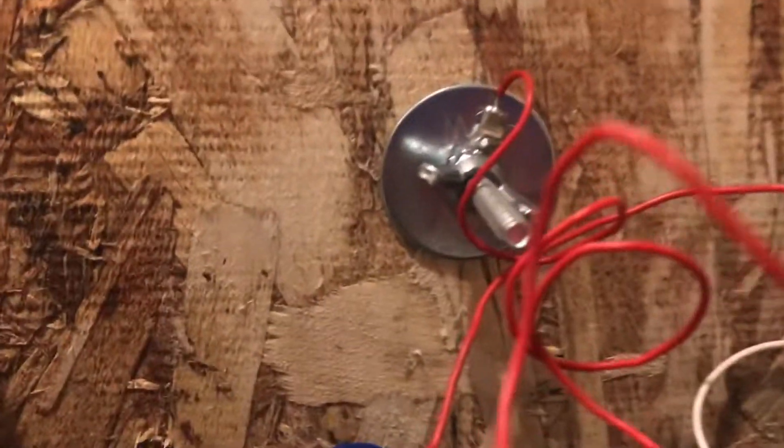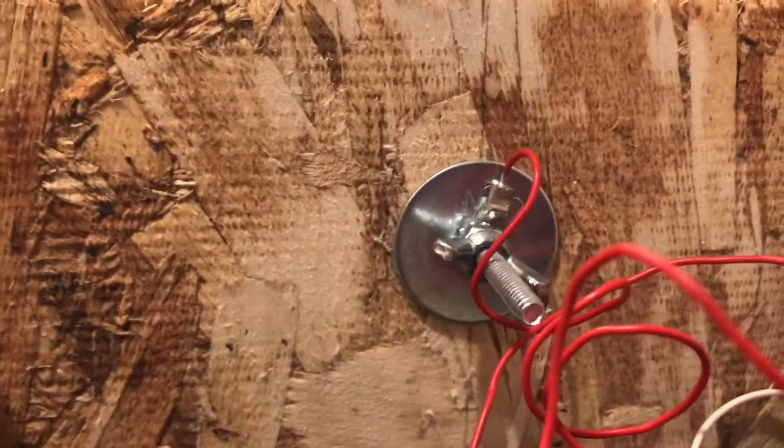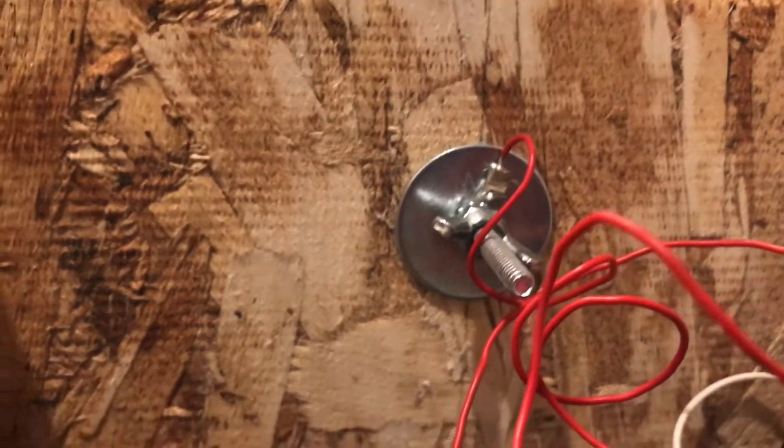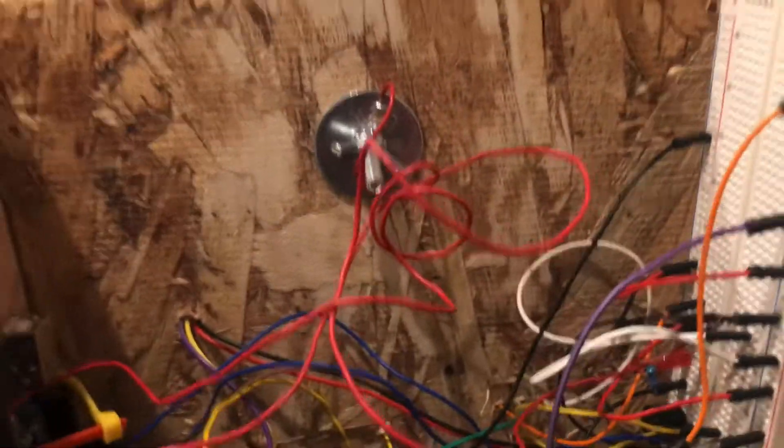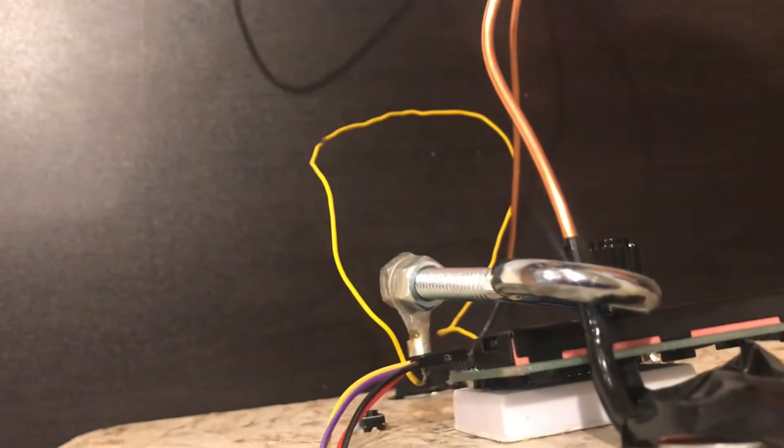Up top right there we have one side of the copper wire being grounded and connected to the Arduino Uno, and the other side is the ring that when it hits the metal wire, the copper wire, it connects the circuit.